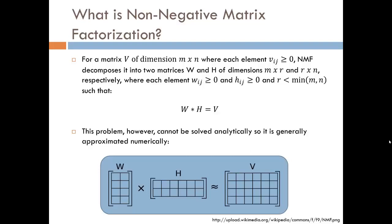This problem has many solutions and cannot be solved analytically, so it is generally approximated numerically. In this example down below, we see a 4 by 6 matrix V is approximated as a 4 by 2 matrix W multiplied by a 2 by 6 matrix H.